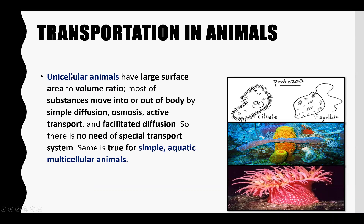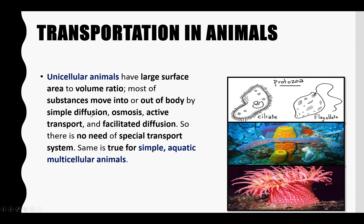First of all, we will talk about unicellular animals. They have a large surface area to volume ratio, which allows substances to easily move in and out of their body. These substances are nutrients, gases, and waste materials, and they are easily transported in and out by simply diffusion, osmosis, active transport, and facilitated diffusion. You have already read this, so there is no need for a special transport system.